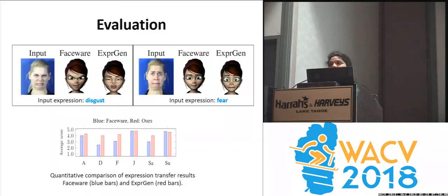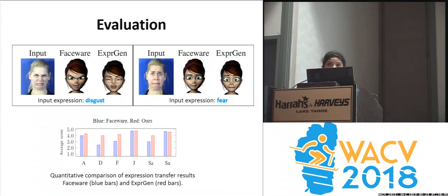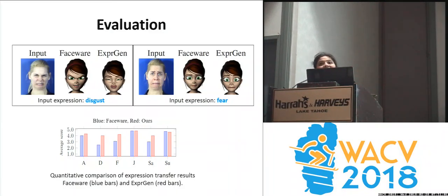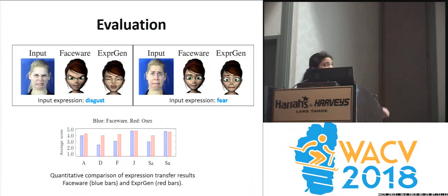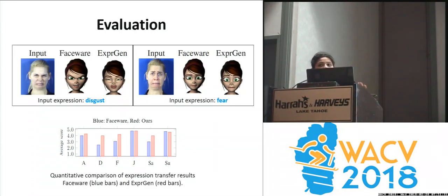We did comprehensive quantitative and qualitative analysis. Here I'm showing just one example of our evaluation strategies. We compared our results with the state-of-the-art method FaceWear, which takes a 2D image input of a human and creates a stylized expression of a 3D character. As you can see for both disgust and fear expressions, the FaceWear expression does not retain the perception of the expression, whereas our method, ExpressionGen, looks more natural and realistic when comparing the expression transfer from the input human image. We performed significantly better in terms of the perceptual equability of the expression on the character and the human.